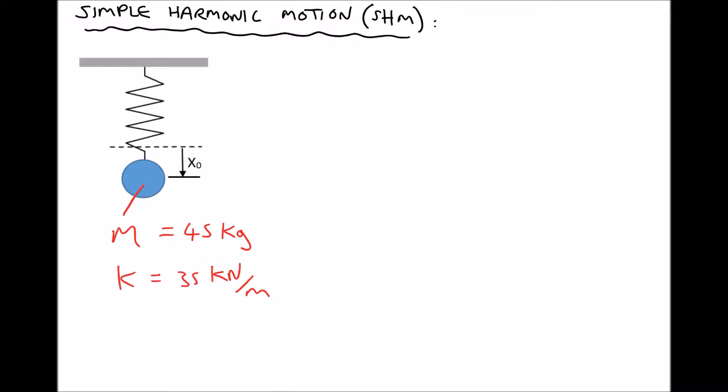In this example we have a mass of 45 kg suspended on a spring of stiffness 35 kN per metre, and an initial displacement equal to 125 mm. We are OK to work in millimetres, providing we remember that our displacement will be in millimetres, our velocity will be in millimetres per second, and our acceleration will be in millimetres per second squared. We are going to find the displacement, velocity, and acceleration after 0.1 seconds has elapsed.